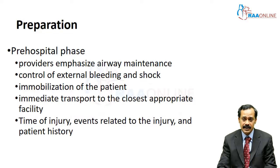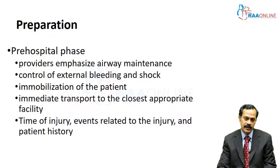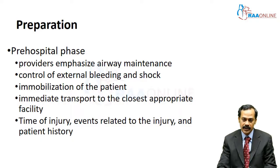Preparation starts at the site of injury itself — this is called the pre-hospital phase. Three important things are addressed: first, airway maintenance by the paramedical person; second, control of external bleeding and shock; and third, immobilization of the patient. All three must be done as the patient is being transported by ambulance. The patient should be transported to the closest appropriate facility, and the time of injury, events related to the injury, and patient history are simultaneously relayed and handed over to the doctors at the hospital.